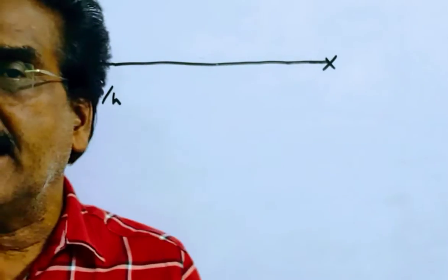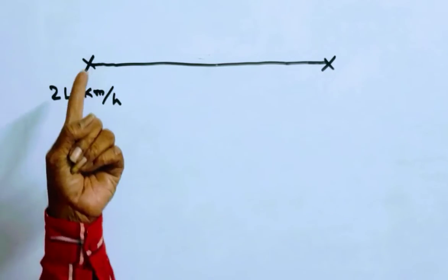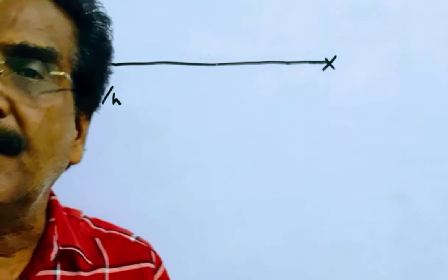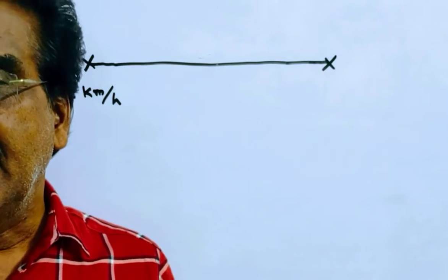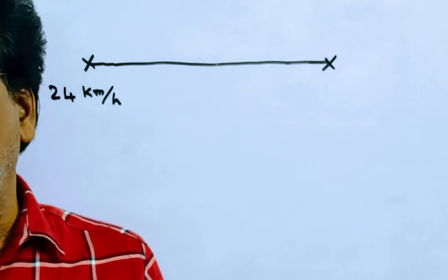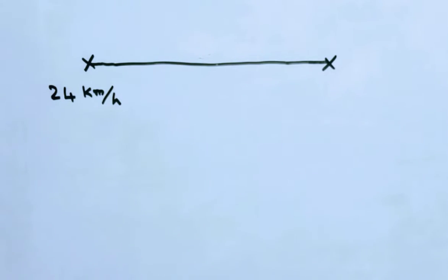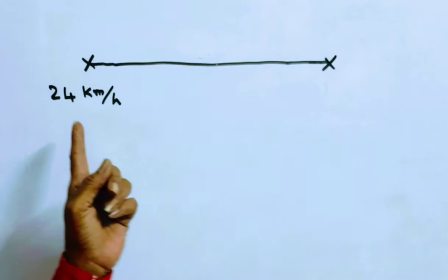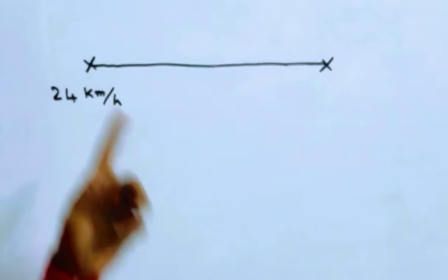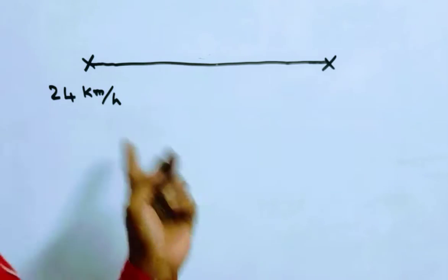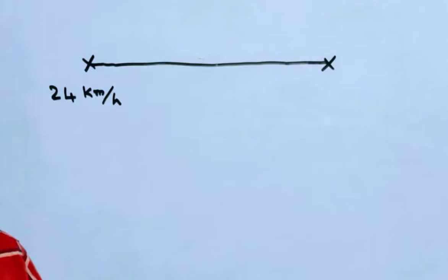Friends, problem is given in the description box. See friends, two cycles start from a house with a speed of 24 kmph at an interval of 15 minutes. That means the second cycle starts 15 minutes after the first cycle.